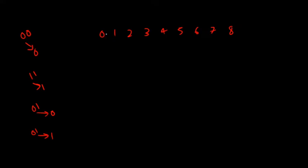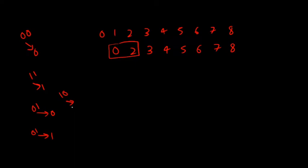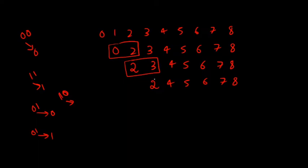So from indices 0 and 1, let's say I choose to keep 0. My string modifies to indices: 0, 2, 3, 4, 5, 6, 7, 8. Then I have a choice between 0 and 2 — I can keep either. Let's say I keep 2. Then from 2 and 3, I keep 2 again. From 2 and 4, I keep 2 again. So I have complete liberty because the operations let me use either the minimum or maximum.